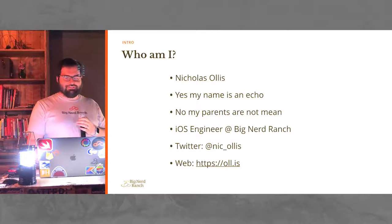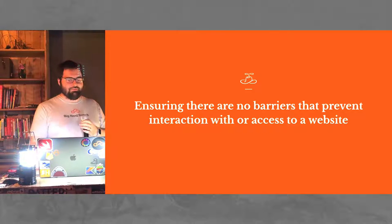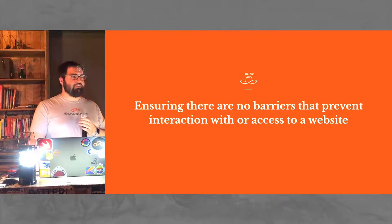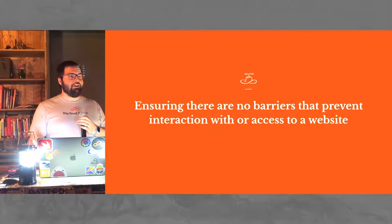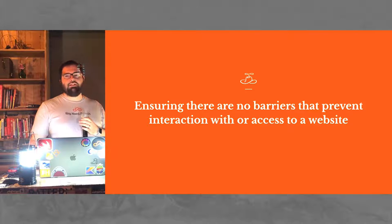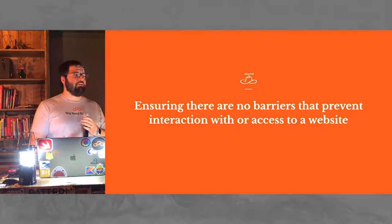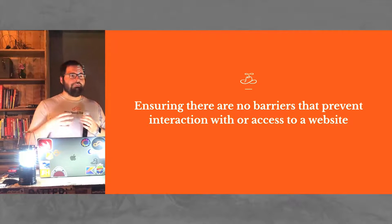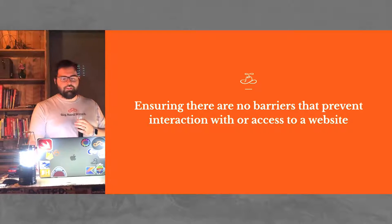First off, let's define what we mean by web accessibility. Essentially, we're trying to ensure there are no barriers that prevent interactions with an app or a site. There are five main areas of accessibility: visual, motor, auditory, seizures, and cognitive. Visual and cognitive kind of go hand in hand. Cognitive fits areas like dyslexia, where screen readers are actually really important — although they can see the screen, they usually need screen readers if it's severe enough to help them read.